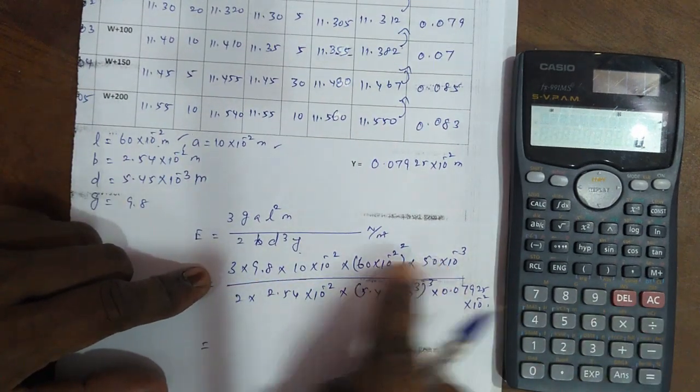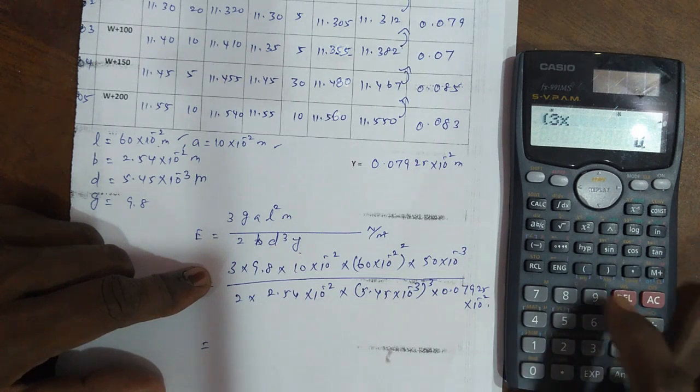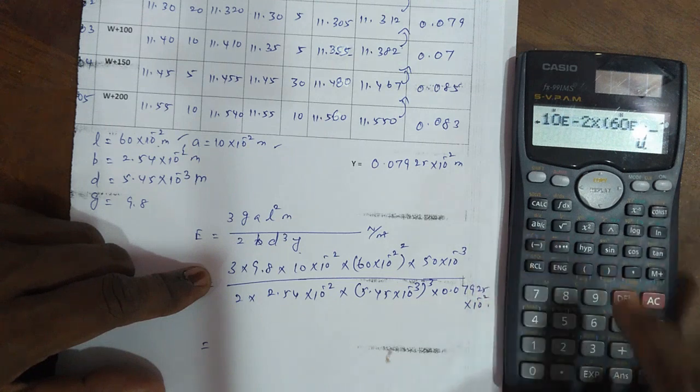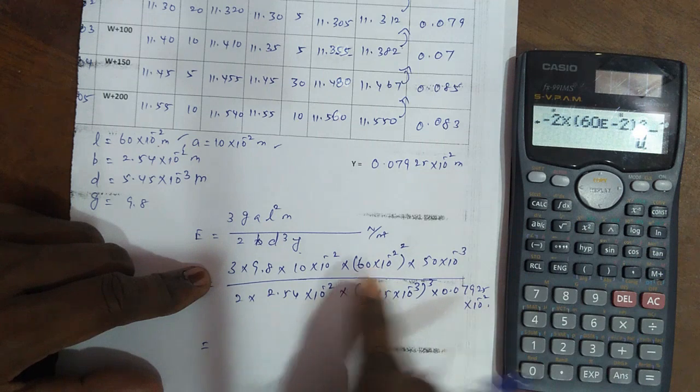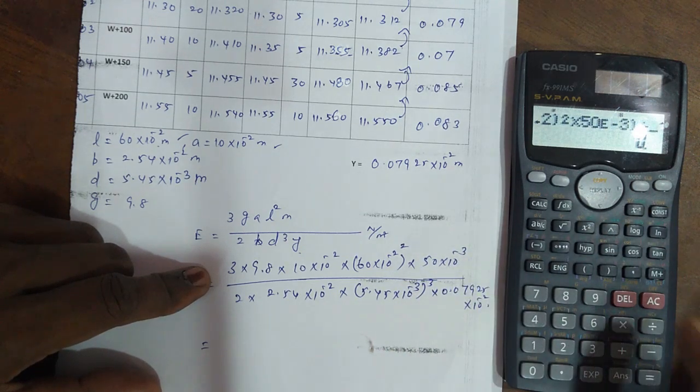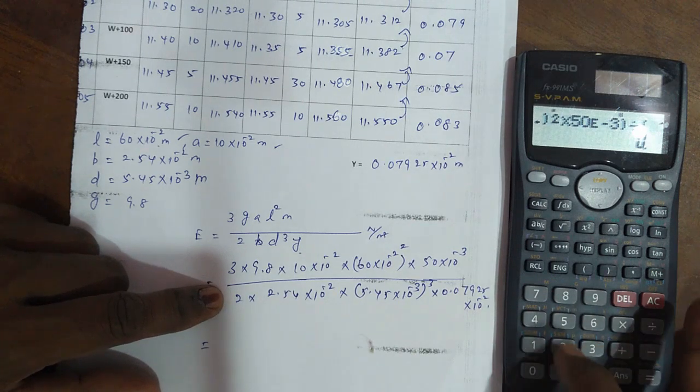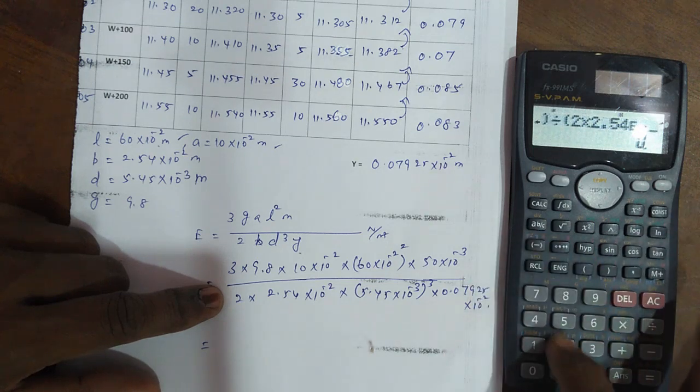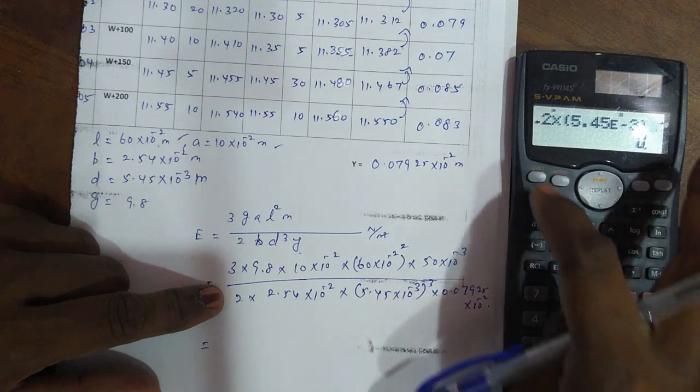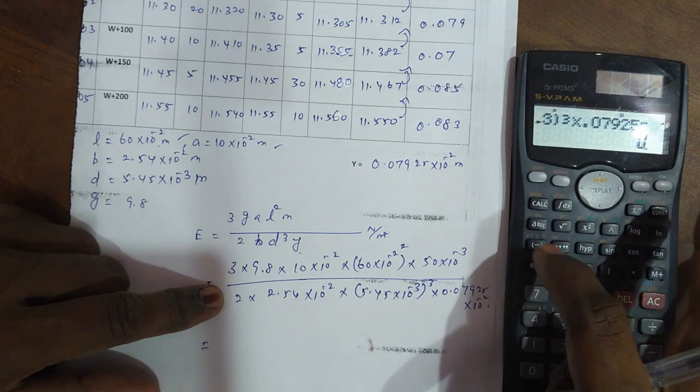First, numerator values in brackets divided by denominator in brackets. Open bracket 3 into 9.8 into 10 to the minus 2 into open bracket 60 to the minus 2 close bracket whole square, into 50 to the minus 3, close bracket, divide by denominator. Open bracket 2 into 2.54 to the minus 2 into open bracket 5.45 to the minus 3 close bracket whole cube, into 0.07925 to the minus 2, close bracket.